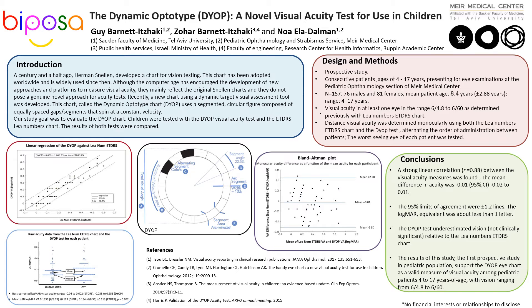We found a strong linear correlation between the visual acuity measures. The mean difference in acuity was minus 0.01. The 95% limits of agreement were plus or minus 1.2 lines, which means that the logMAR equivalent was about less than one letter.